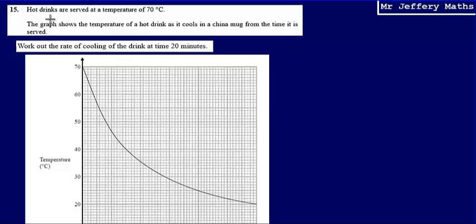This is question 15. Here we're told that hot drinks are served at a temperature of 70 degrees centigrade, and the graph shows the temperature of a hot drink as it cools in a china mug from the time it is served.